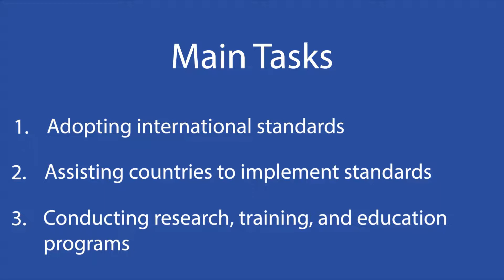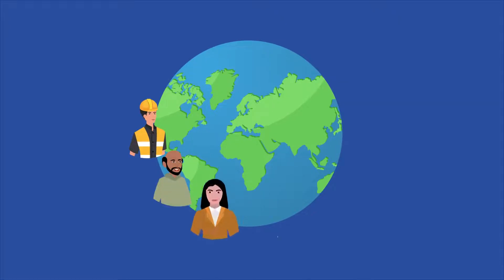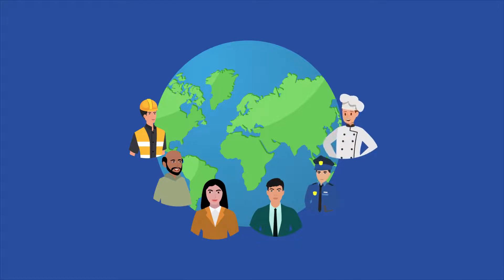During its early years, the ILO focused mostly on setting key principles and standards for issues such as maximum weekly work hours, minimum age, protections for working mothers, and unemployment. As time went by and newly independent and industrializing countries joined the ILO, the agency expanded its work to promote economic coordination among member states and advocacy to prevent workers from being exploited.